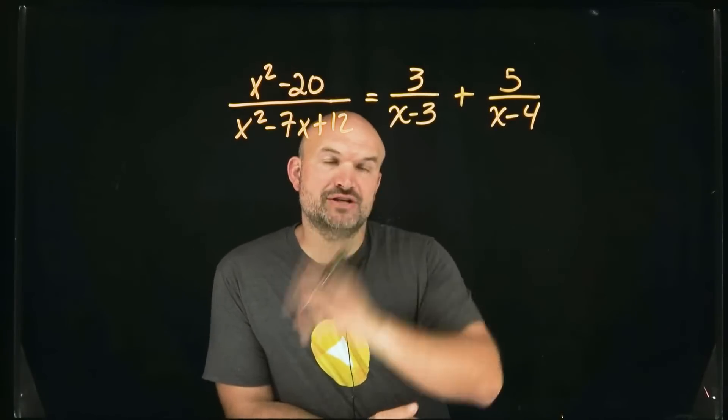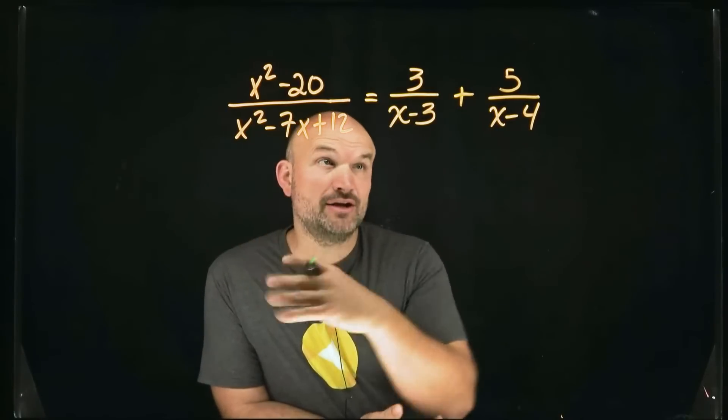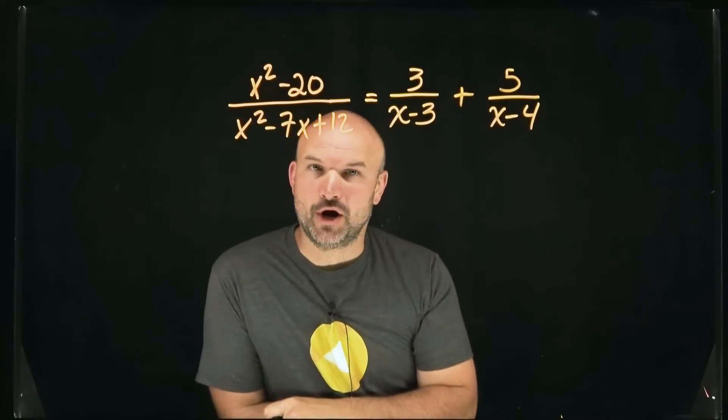Let's go ahead and solve a rational equation like this. Now the first thing I recognize here is I have one denominator that's a trinomial and I have two other denominators that are binomials.